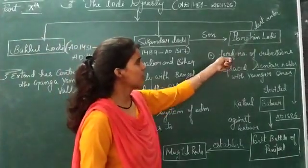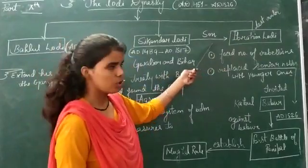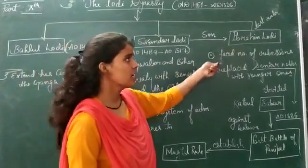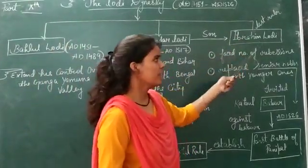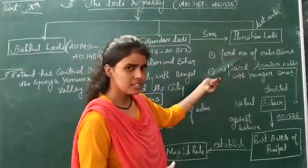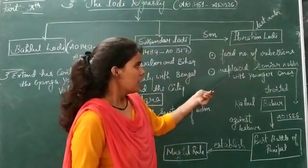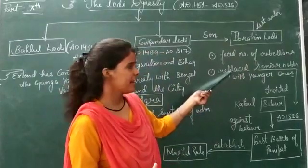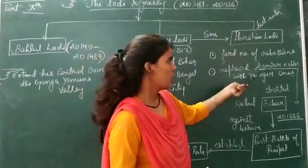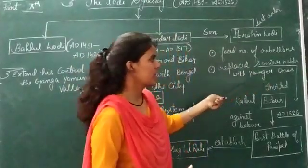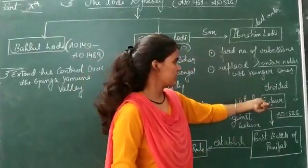Now, if we talk about Ibrahim Lodi, he was the son of Sikandar Lodi and the last ruler of the Lodi Dynasty. He faced a number of rebellions and tried to manage them. He also replaced senior nobles with younger ones, which brought a lot of resentment.